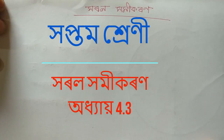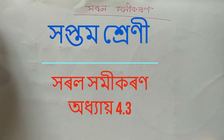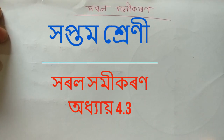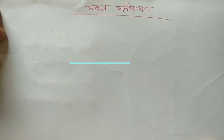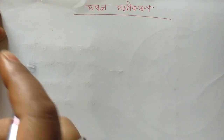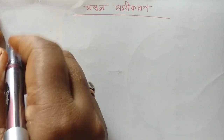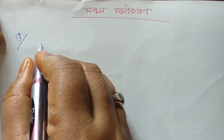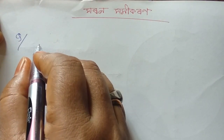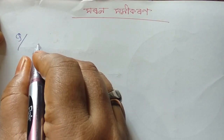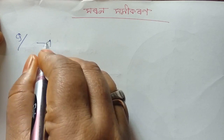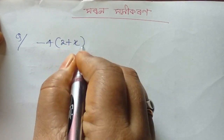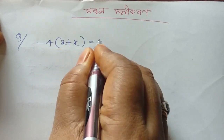Hello everyone. I am going to class 7. I am going to see 4.3. The question is minus 4 times 2 plus x equals 8.